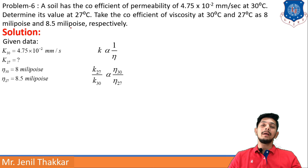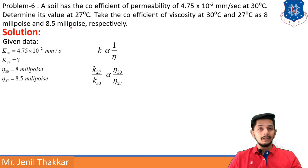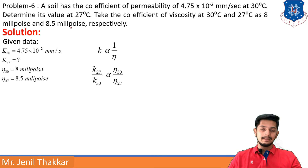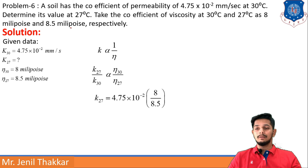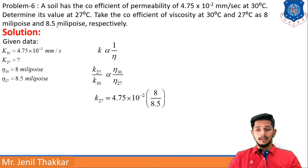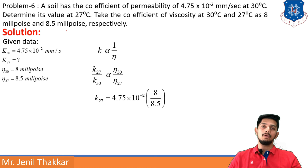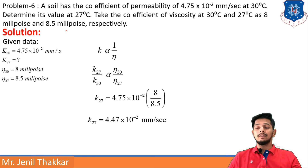So k27/k30 = η30/η27. Putting all three known values and keeping k27 as unknown, k27 = 4.47×10⁻² mm/s.